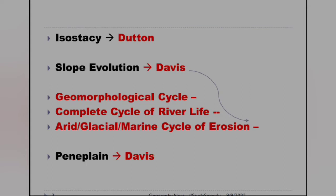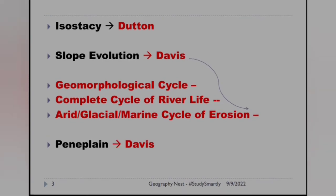Slope evolution — Davis. And Davis also gave the following three theories or models: geomorphological cycle, complete cycle of river life, and arid cycle of erosion, glacial cycle of erosion, and marine cycle of erosion. Another concept of Davis is the peneplain.